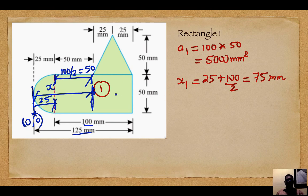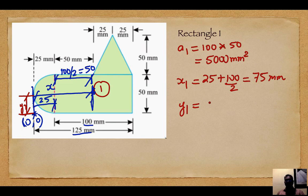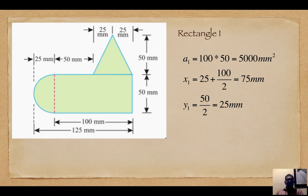For y1, it is very simple: the total breadth is 50 mm, so y1 = 50/2 = 25 mm. That completes the rectangular section. Next, we look at the semicircular section.